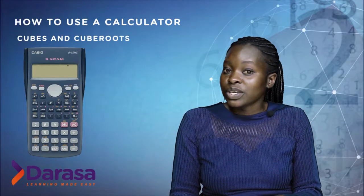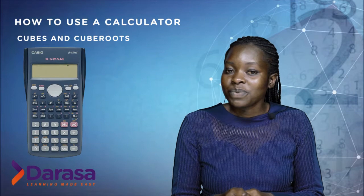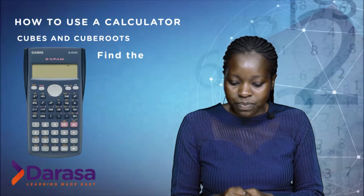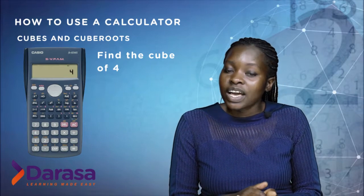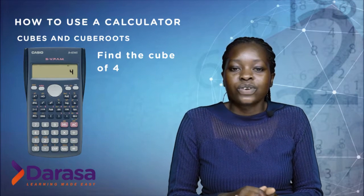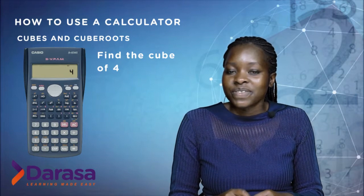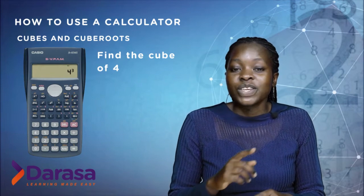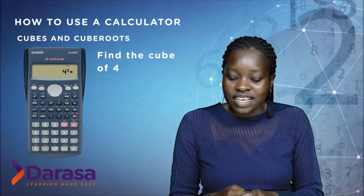How do we find cubes and cube roots using calculators? For example, to find the cube of four, go to your calculator and key in four. Then look for the button with the operation x raised to power three. Key in that operation — so you key in four, then x raised to power three, then equals — and you'll get your answer as 64.